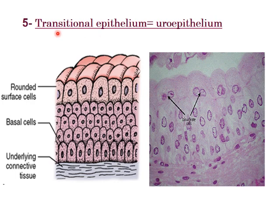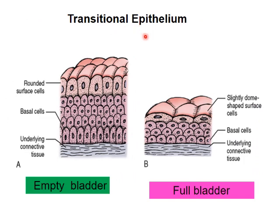To identify transitional epithelium in a tissue section, look for the dome-shaped top layer with rounded nuclei. When the bladder is empty, six to eight layers are visible. When full, the dome-shaped cells flatten and middle-layer cells slide over each other, reducing the number of layers to give more space for urine accumulation.